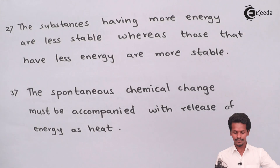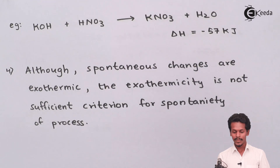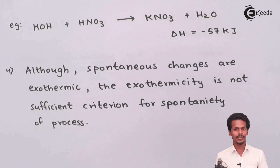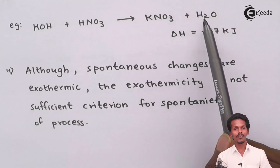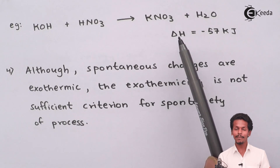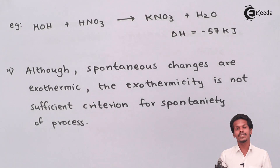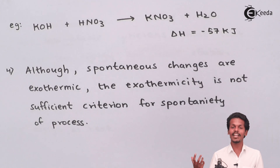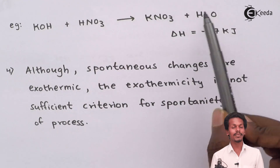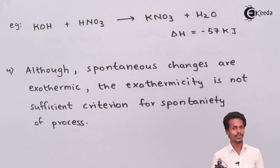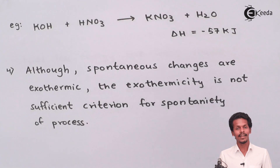For example, when KOH (a base) reacts with nitric acid (HNO3) in an acid-base neutralization, it forms KNO3 (potassium nitrate) and water. The enthalpy change for this reaction is found to be −57 kJ, meaning this much energy has been released, making it an exothermic reaction. Since the stability of KNO3 + H2O is greater than that of KOH + HNO3, this reaction is a spontaneous process.